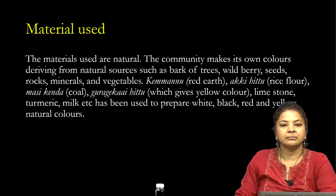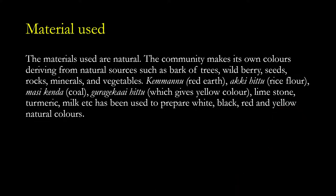The materials used are natural, like in most folk art. The community makes its own colors derived from natural sources such as bark of trees, wild berries, seeds, rocks, minerals and vegetables. Red earth, rice flour, coal, various kinds of berries, limestone, turmeric, milk, etc. are used to prepare white, black, red, and yellow colors which are derived from these natural elements.